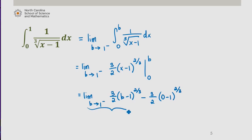Now this term goes to 0, and this term is negative 3 halves times negative 1 to the 2 thirds. Now negative 1 to the 2 thirds is equal to 1, because we're squaring and then taking cube root, or we can think of it as cube root of negative 1 squared. Negative 1 squared gives me 1, so this results in an integral of negative 3 halves.